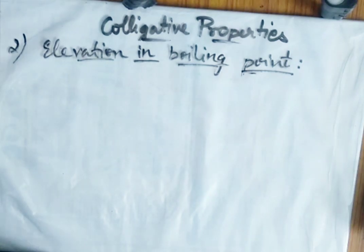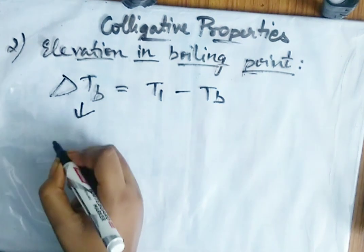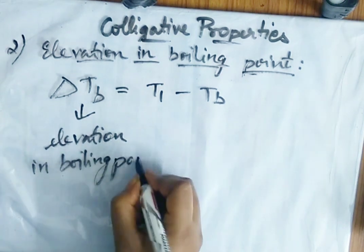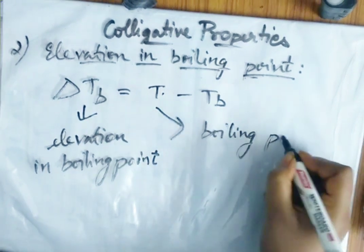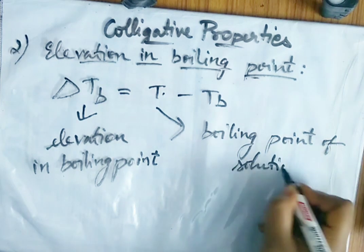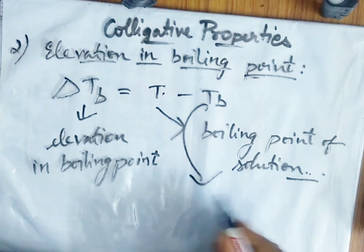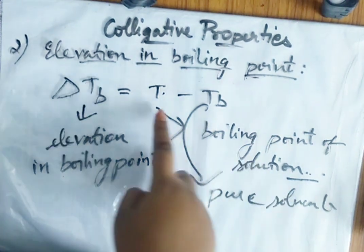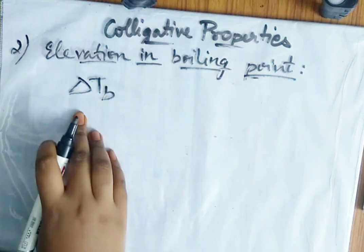The elevation in boiling point is represented by delta Tb, given by Tb(solution) minus Tb(solvent). Here Tb(solution) is the boiling point of the solution and Tb(solvent) is the boiling point of the pure solvent. Tb(solution) will always be greater than Tb(solvent) because adding solute increases the boiling point.